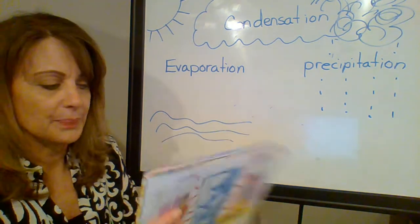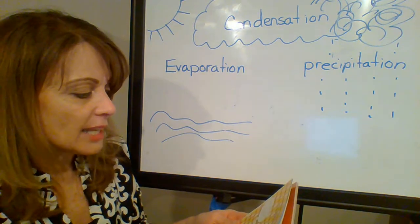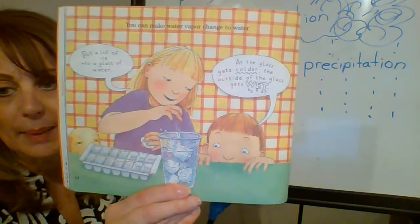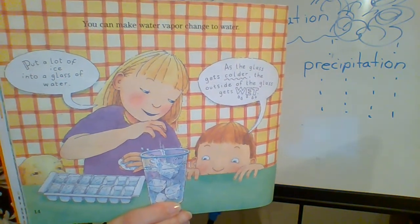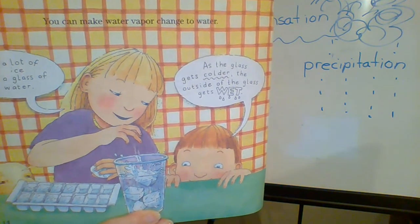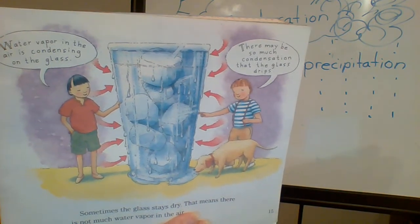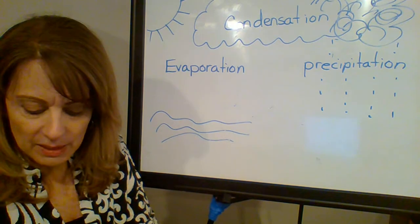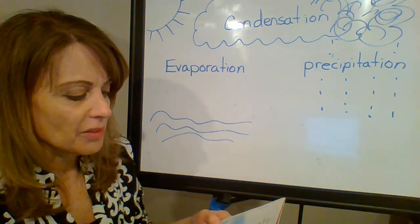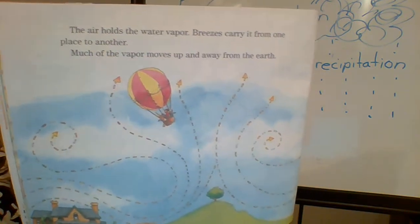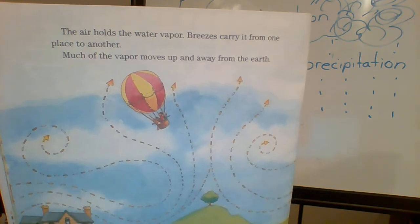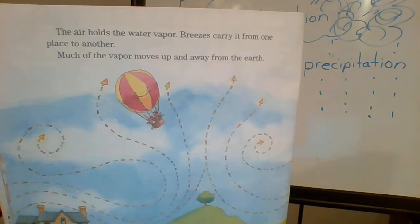You can make water vapor change to water. Put a lot of ice into a glass of water. As the glass gets colder, the outside of the glass gets wet. Water vapor in the air is condensing on the glass. There may be so much condensation that the glass drips. Sometimes the glass stays dry — that means there is not much water vapor in the air. The air holds the water vapor. Breezes carry it from one place to another. Much of the vapor moves up and away from the earth. Air above the earth is always cold — the higher you go, the colder it gets. When air gets cold enough, the water vapor condenses, and the vapor changes to water droplets, which make clouds.